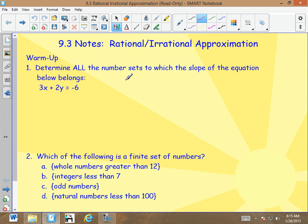Alright, determine all the number sets to which the slope of the equation below belongs. That means I have to subtract 3x to both sides, so 2y equals negative 3x minus 6. Now I divide everything by 2. y equals negative 3 over 2x minus 3.